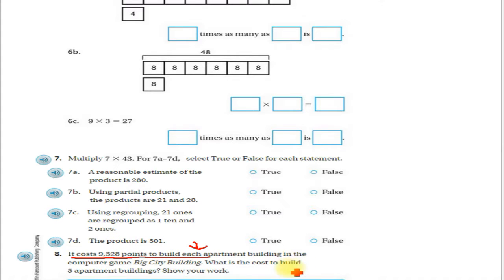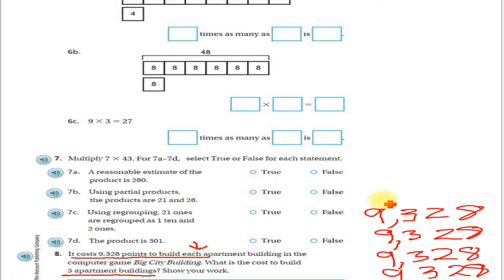So first thing I want to underline that important information: it costs 9,328 points to build each apartment building. So this is important - every single one costs 9,328 points. What is the cost to build 5 apartment buildings? So every apartment building costs 9,328 points. The first apartment building is going to cost me 9,328 points. I build another one, that's another 9,328. I build another one, that's another 9,328. So for each one I build, it's another 9,328, and I want to build 5.